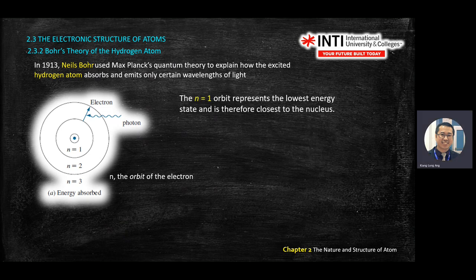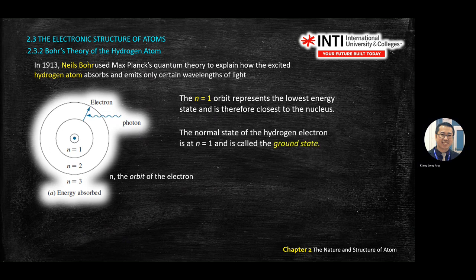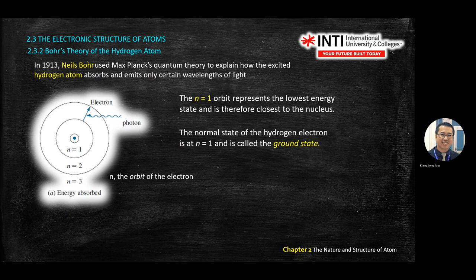We introduce the orbit number n. n = 1 is the first orbit, closest to the nucleus, and is called the ground state. Questions may ask you to calculate the energy needed to move an electron from a certain orbit to the ground state, or from the ground state to a certain orbit.